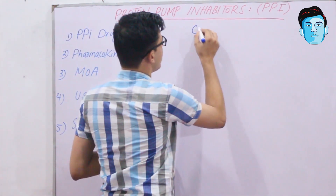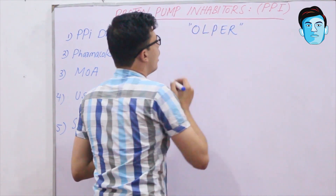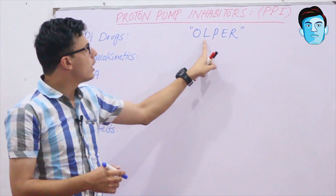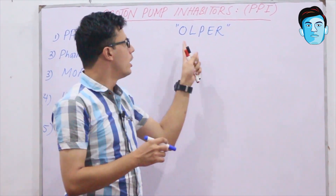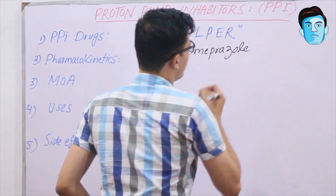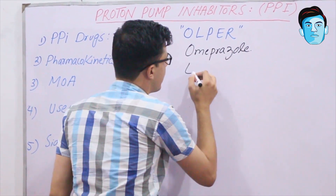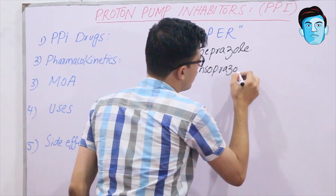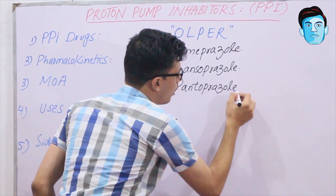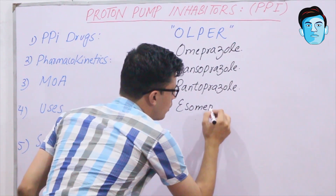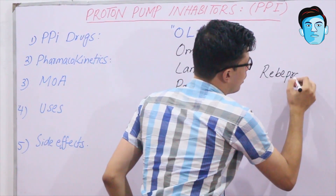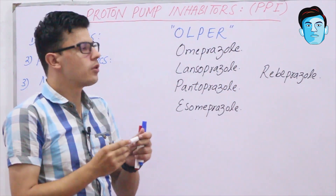We have a very easy trick — the mnemonic 'OLPERE' — where every single alphabet corresponds to one of the PPI drugs. O stands for omeprazole, L stands for lansoprazole, P stands for pantoprazole, E stands for esomeprazole, R stands for rabeprazole, and E stands for esomeprazole.